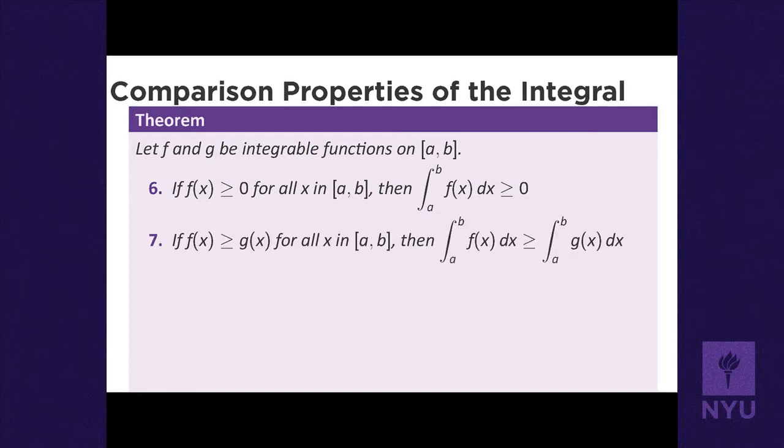Second comparison property: if f(x) ≥ g(x), then the integral from a to b of f(x) is greater than or equal to the integral from a to b of g(x). If one function is at least as big as another, its integral is at least as big.